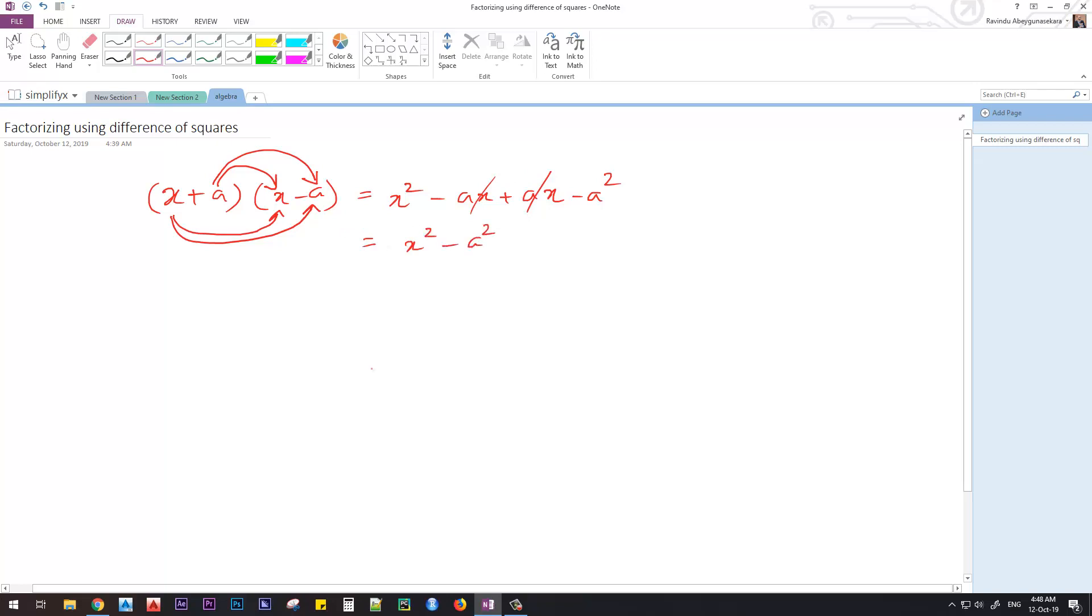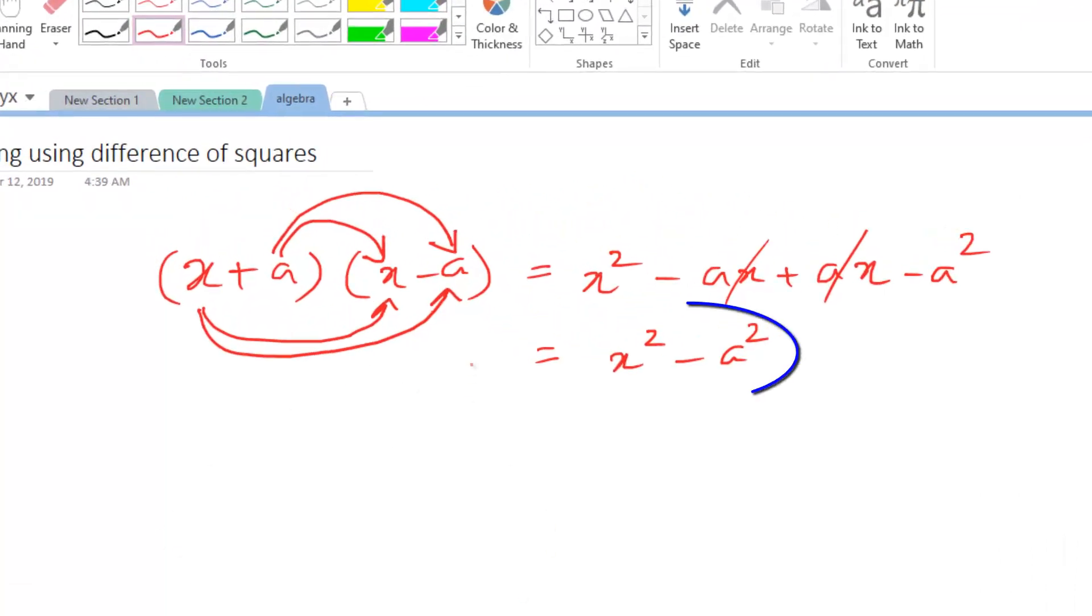So this is the difference of two squares. (X + A)(X - A) equals X squared minus A squared.